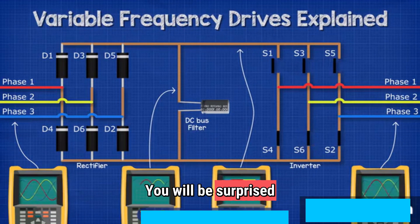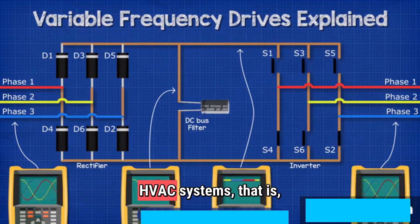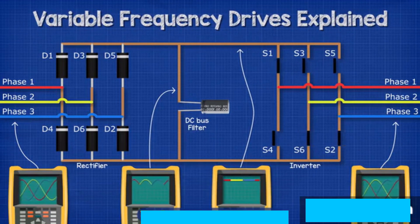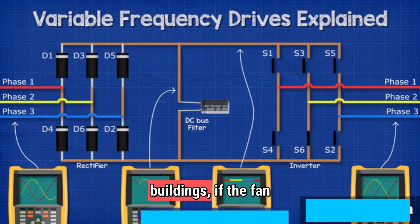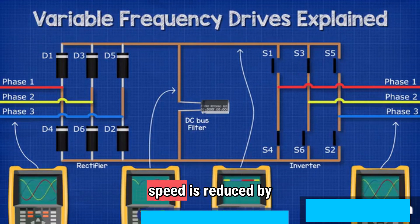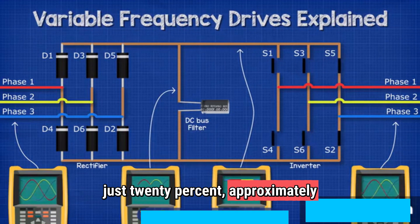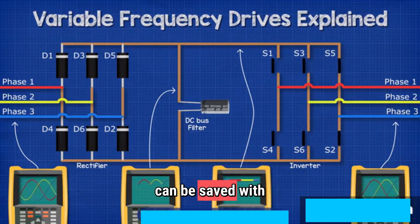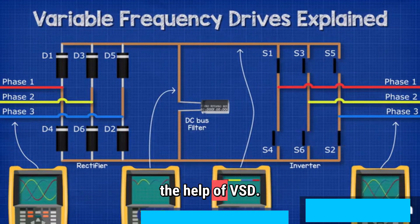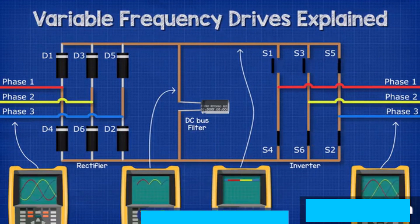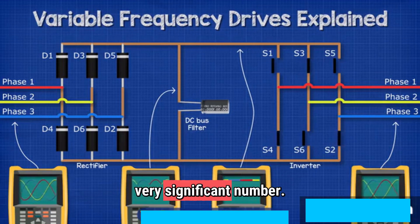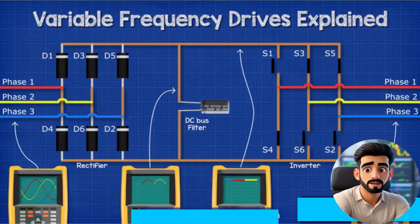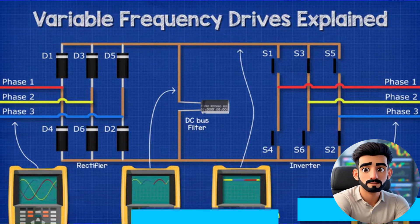You will be surprised to know that in HVAC systems — that is, cooling systems of large buildings — if the fan speed is reduced by just 20%, approximately 50% of energy can be saved with the help of VSD. 50% is a very significant number. Now you might be wondering how this magic happens. For this, we will have to look inside the VSD.